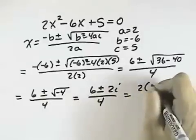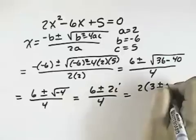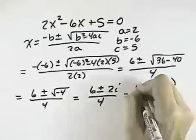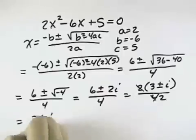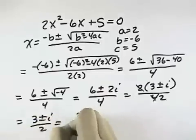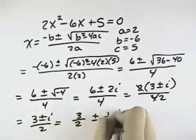Factoring out a 2 on top, we have 3 plus or minus i all over 4. We can cancel the 2 out now and have 3 plus or minus i over 2, which is typically written as 3 over 2 plus or minus 1 half i.